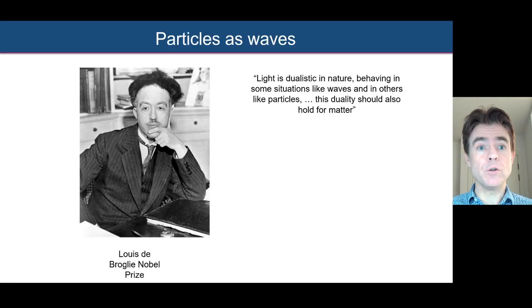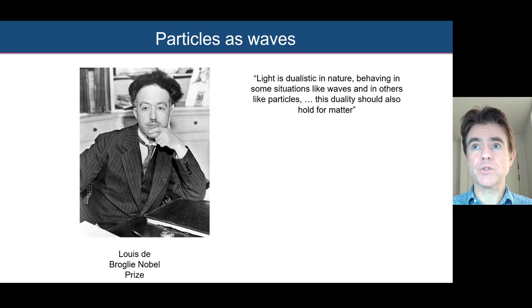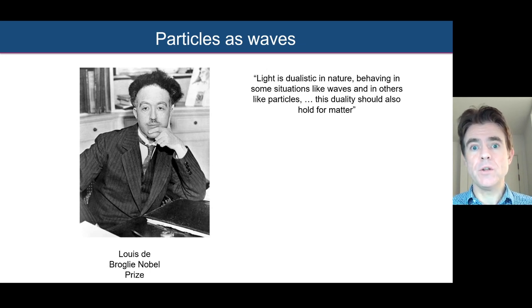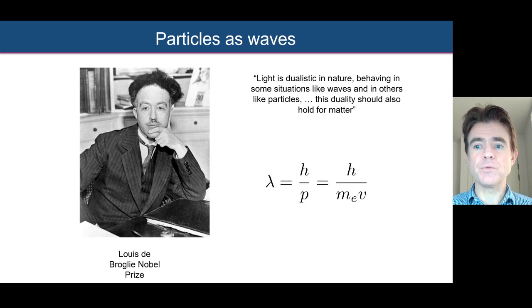Louis de Broglie proposed wave-particle duality, saying that just as photons behave like particles and waves, so also the same could be true for electrons. That was experimentally verified later on after his PhD thesis back in 1924. His hypothesis was that the wavelength of a particle is given by Planck's constant divided by the momentum of that particle.